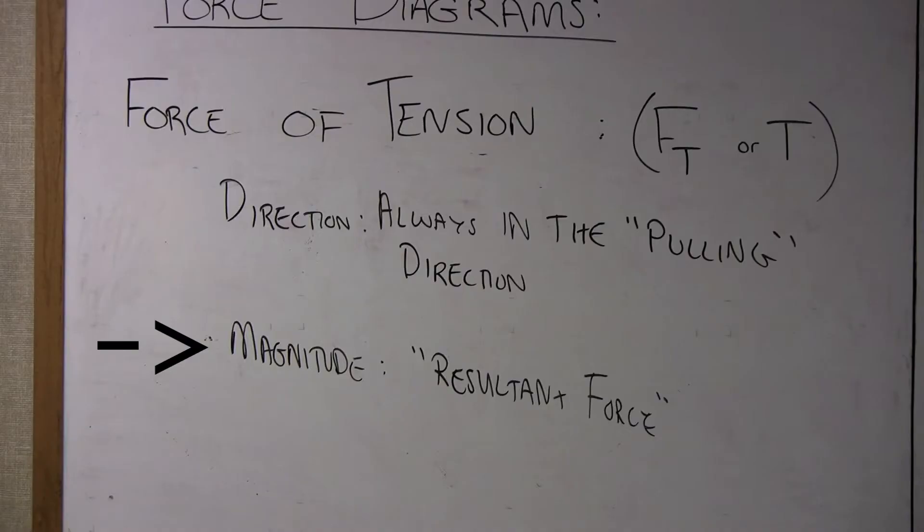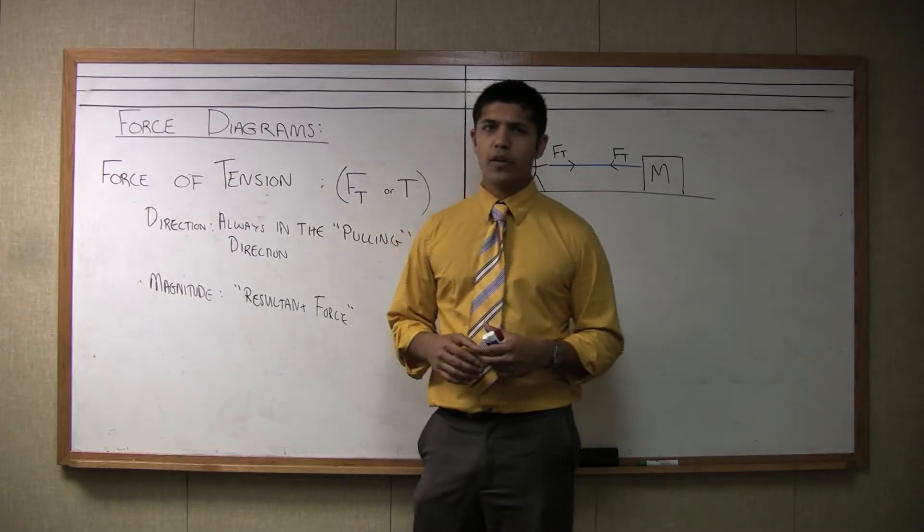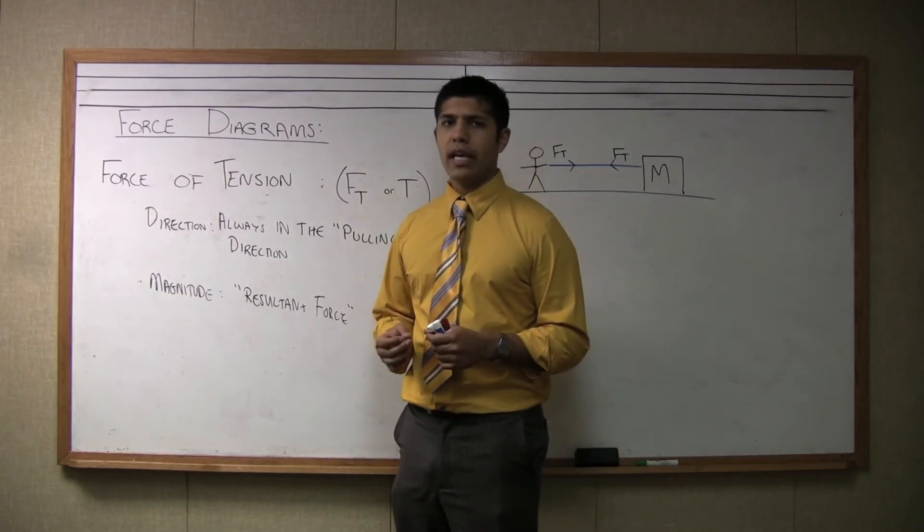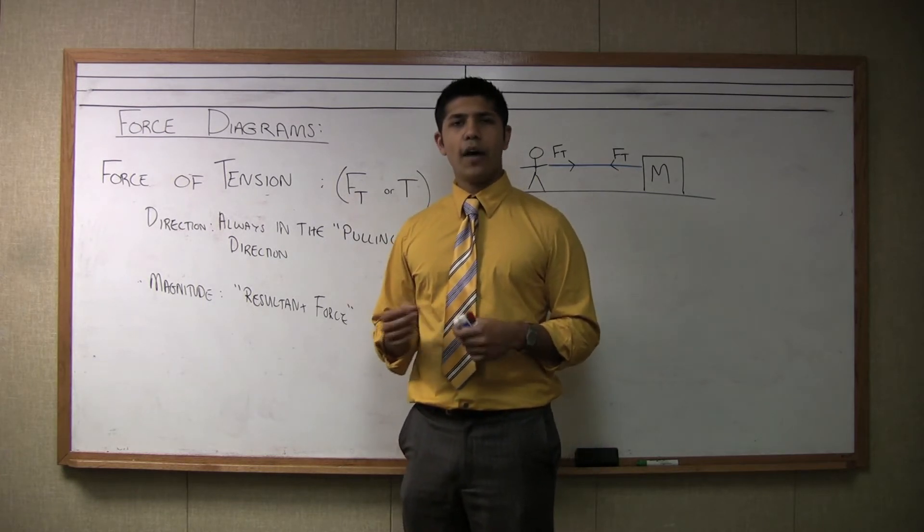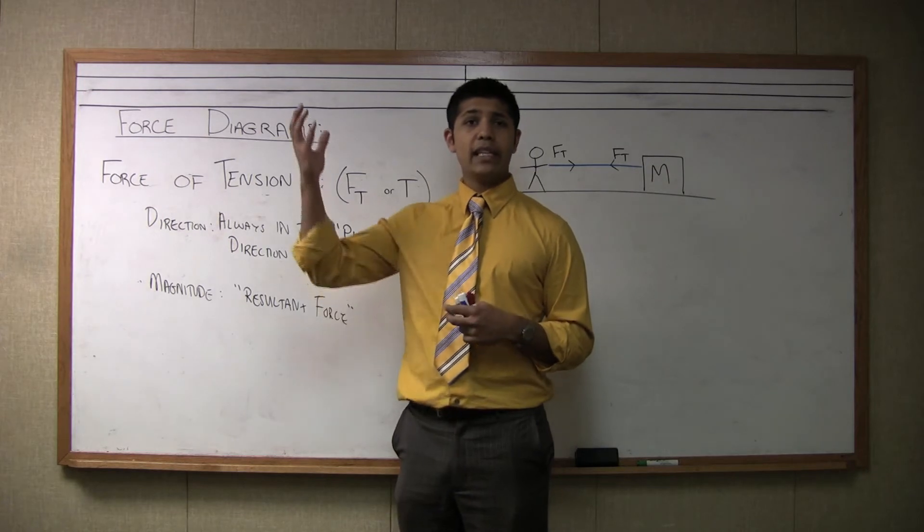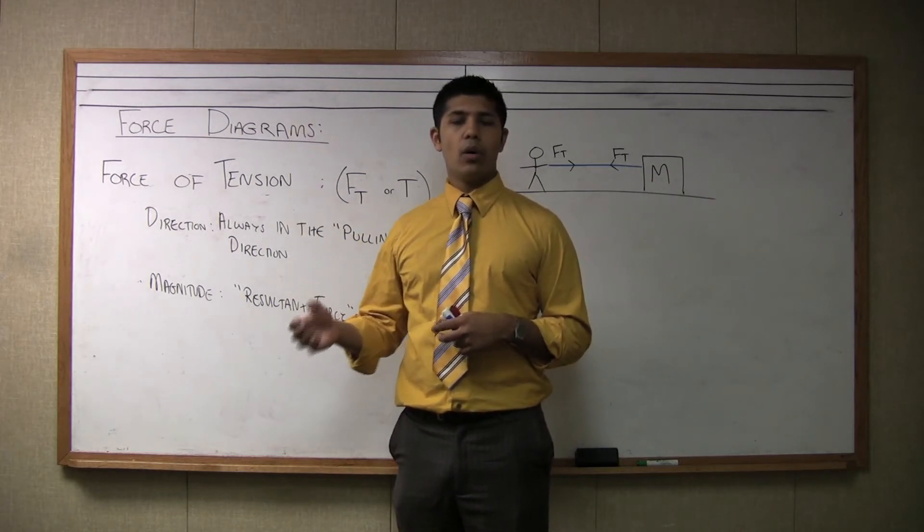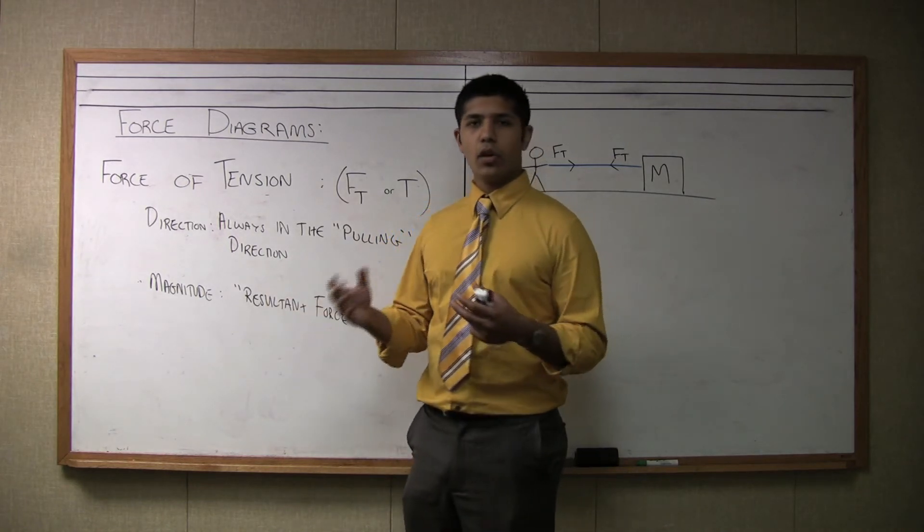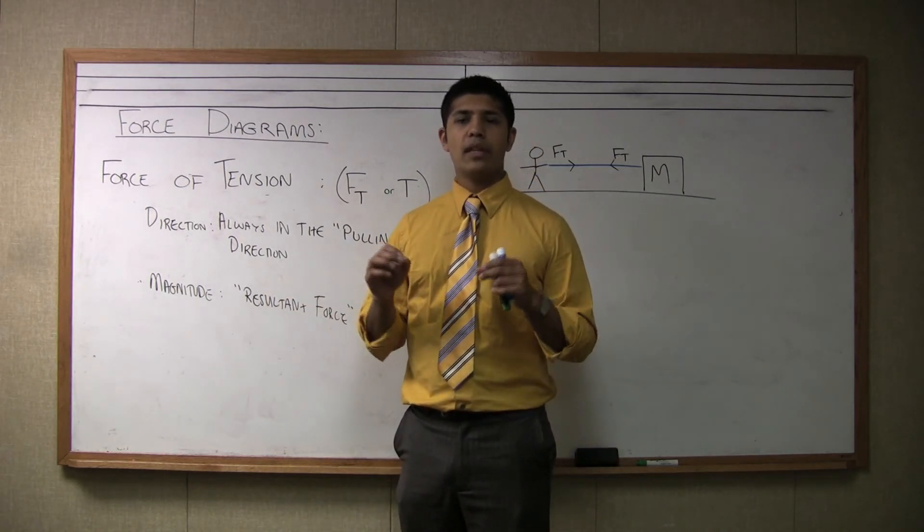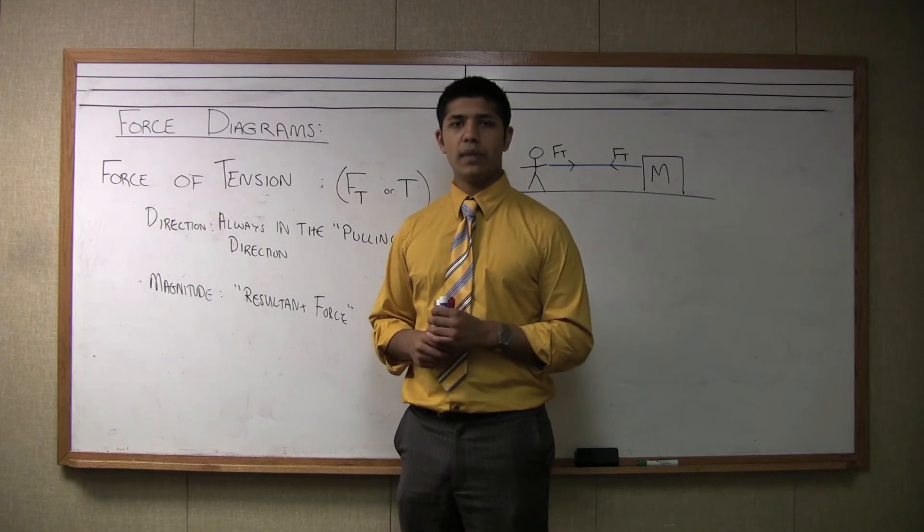And the magnitude again is going to be a resultant force. Now what do I mean by resultant force? Well, this is similar to the normal force, is that it is a result of something else. Tension will oftentimes be the result of gravity in the case of a hanging object or the muscular force of a human being when you're pulling. So those two things are going to determine what the magnitude of the tension is going to be.